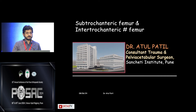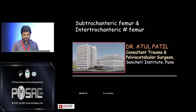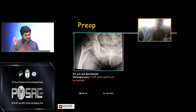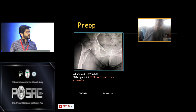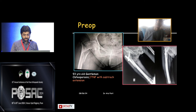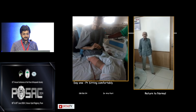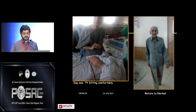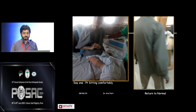Subtrochanteric and intertrochanteric fractures are a huge topic, very close to the heart of every orthopedic surgeon. This is a 93-year-old gentleman with osteoporosis, presenting with an intertrochanteric fracture femur with subtrochanteric extension. Should we consider replacement because he is 93? His frailty score is very high. However, you can treat this percutaneously with a long nail with static locking because it is subtrochanteric, and immediately mobilize the patient with a good end result using a cephalomedullary nail.